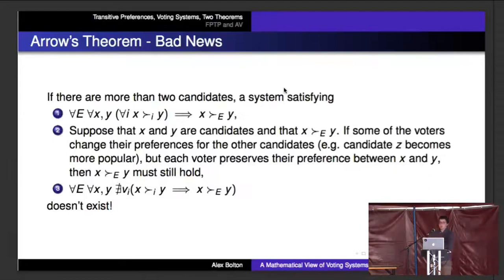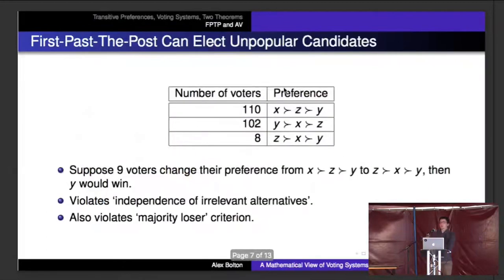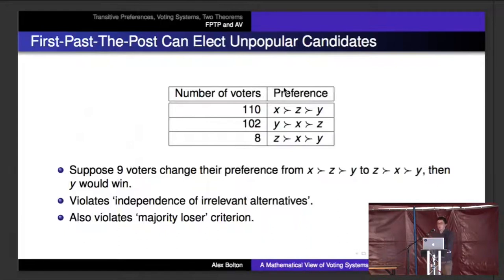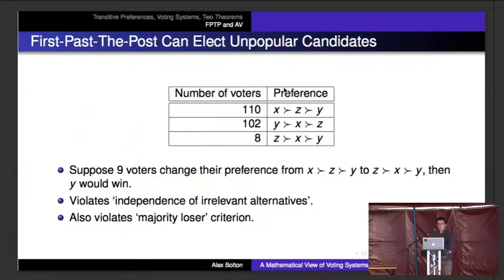The most commonly unsatisfied condition is independence of irrelevant alternatives. Let's look at that in first-past-the-post. Suppose 110 people rank x, z, y; 102 rank y, x, z; and 8 rank z, x, y. If nine people change their preference from the first group to the third, y would win — but y is still as unliked as before; people still say anyone is better than y. Because some people shifted their preference between x and z, y now wins. This violates independence of irrelevant alternatives and also violates the majority loser criterion — you can elect candidates that a majority say anyone-but, and they can still win.